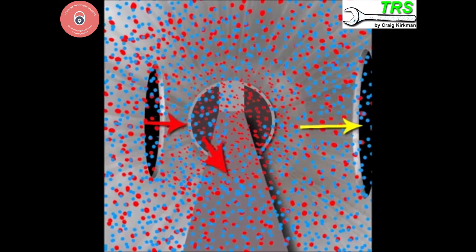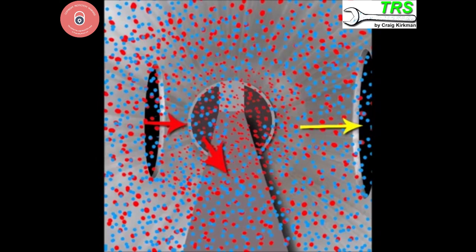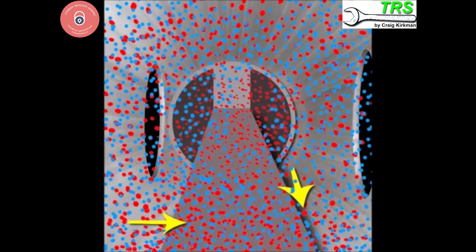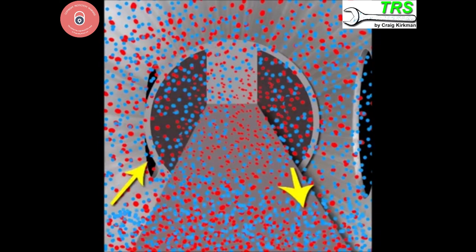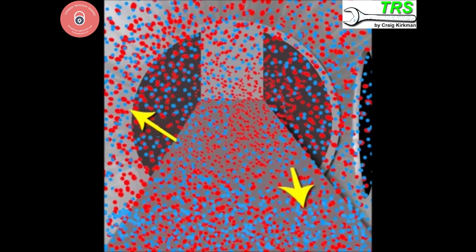And as the piston lowers it starts to compress all of us fuel molecules together before it blocks off the inlet port. As this pressure increases we're forced through the open transfer port.